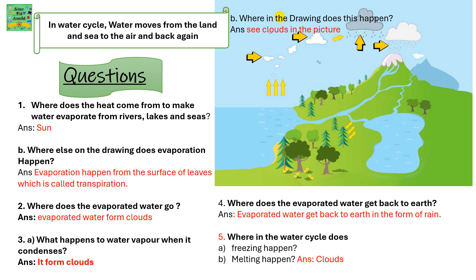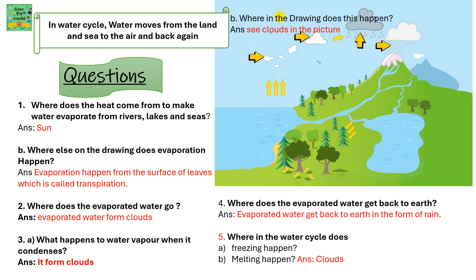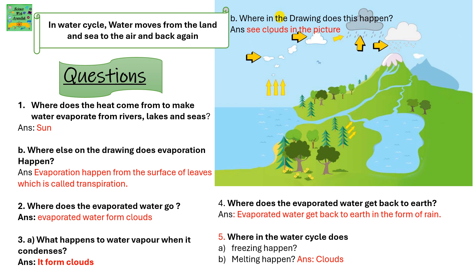Where does the evaporated water go? The evaporated water forms the clouds. What happens to water vapour when it condenses? The water vapour forms clouds. Where does the evaporated water get back to earth? It gets back to earth in the form of rain. Where in the water cycle does freezing and melting happen? Both these processes happen in the clouds. The clouds are formed by freezing of water while the rain is the melting of the clouds.